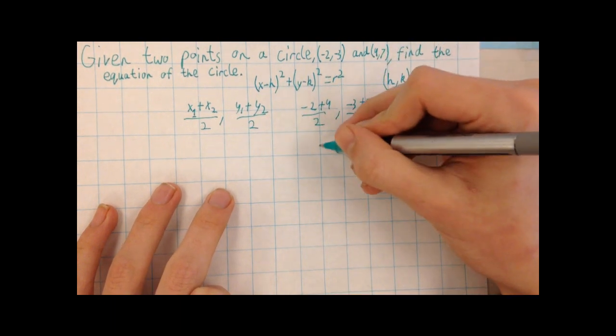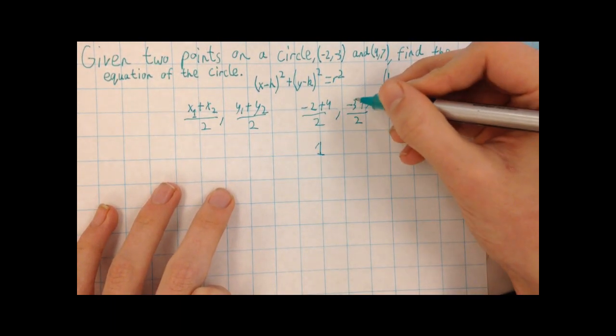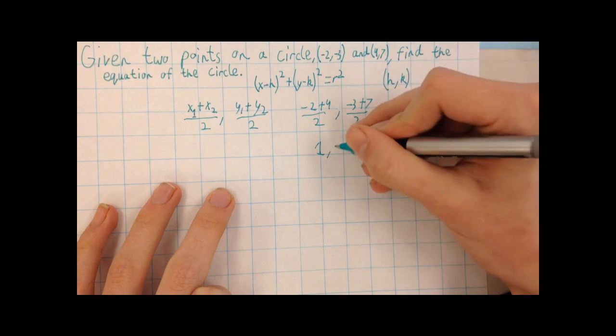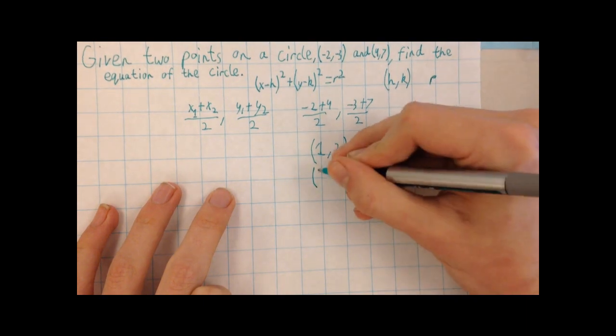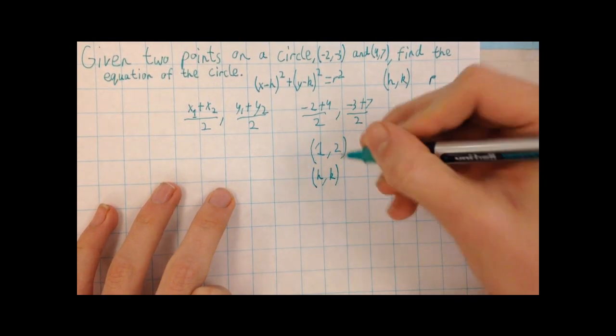This becomes 2 over 2, which is 1. And this becomes 4 over 2, which is 2. So this is our midpoint. The 1 is h, and the 2 is k.